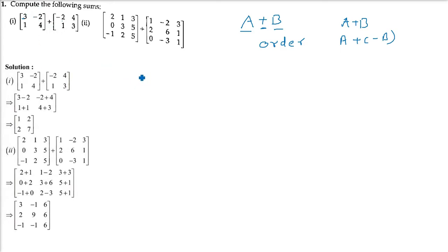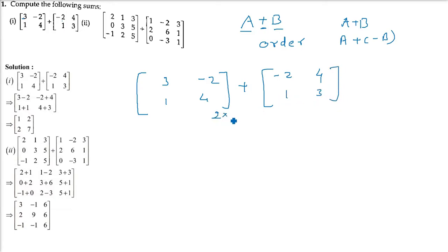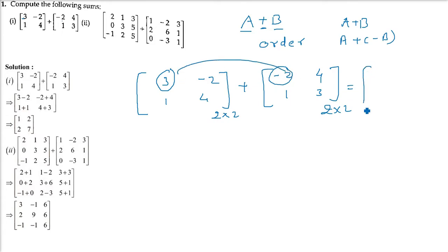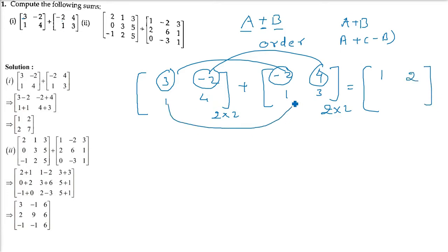I'll do the first two questions so that you understand the later ones. Writing the first matrix, then negative 2, 4, 1 and 3. First thing: the order has to be same — this is 2 by 2 and this is also 2 by 2. Now just add corresponding elements: 3 and negative 2 gives 1; negative 2 and 4 gives 2; 1 and 1 gives 2; 4 and 3 gives 7.